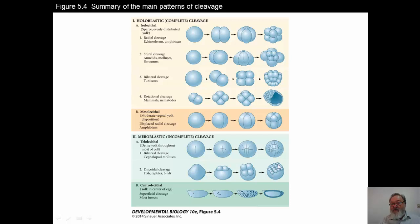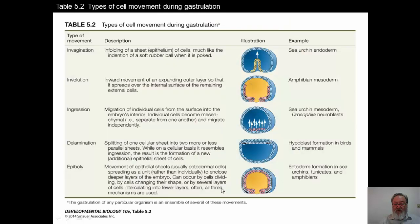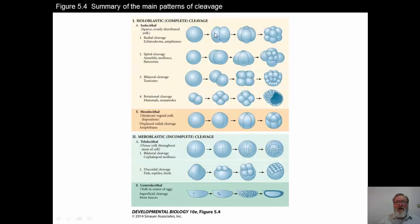In the case of the insects, and we'll be looking at Drosophila before too long, what happens here is you have a lot of yolk in these eggs as well, and the cells will start to divide along the periphery, and so that's centrolecithal division.